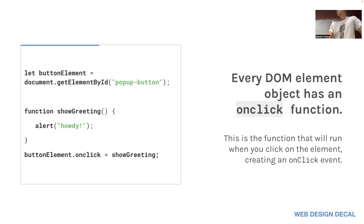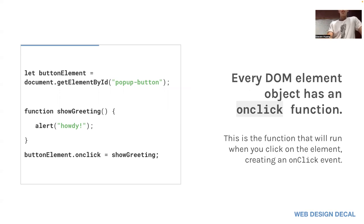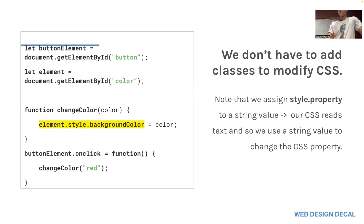Every DOM element has an onclick function. If you want something to happen when you click it, you do buttonElement.onclick = showGreeting, and then the function just calls an alert. Note that when you write onclick = showGreeting, you don't include parentheses, because including parentheses would immediately call the function. We want to delay it until the button is clicked.